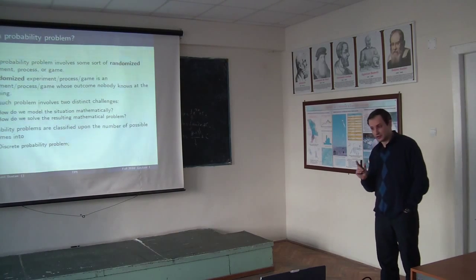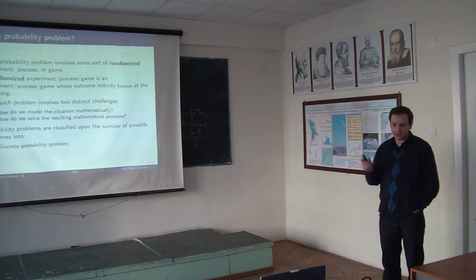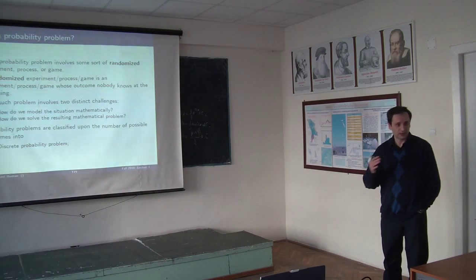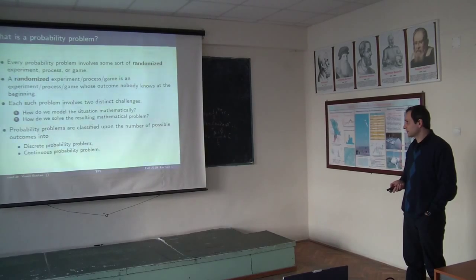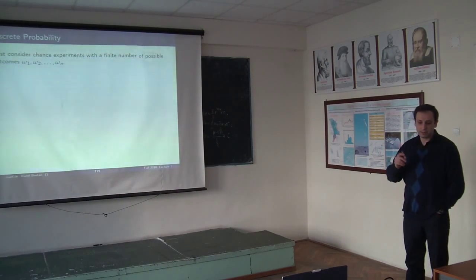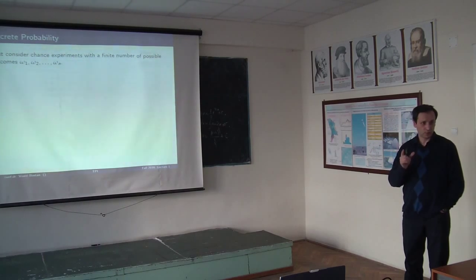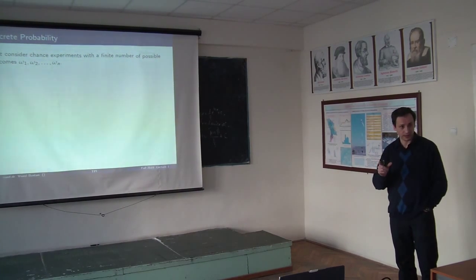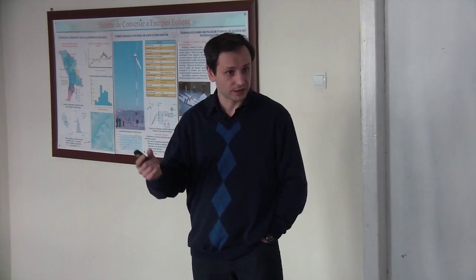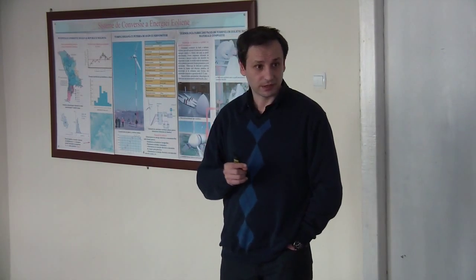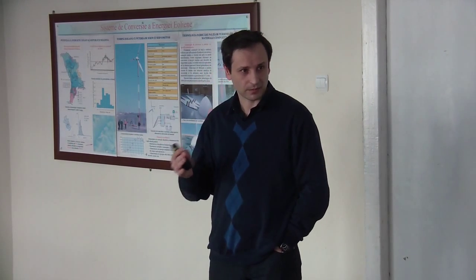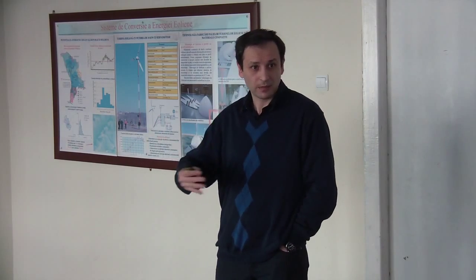We have two different types of probability — discrete probability and continuous probability. This differentiation is basically made based on how many outcomes you have. If you have finitely many outcomes, or countably many outcomes — as many as natural numbers — this is discrete. If you have as many as real numbers, this is continuous probability. The notions and ideas lying behind both are the same; just the formulas are slightly different. In one case we will have sums, in another case we will have integrals — but an integral is nothing else but a sum in a limit.